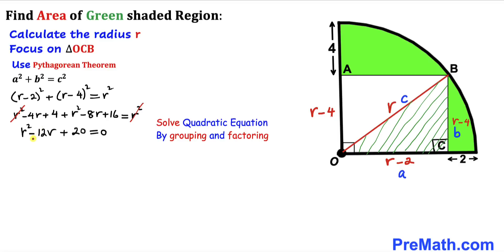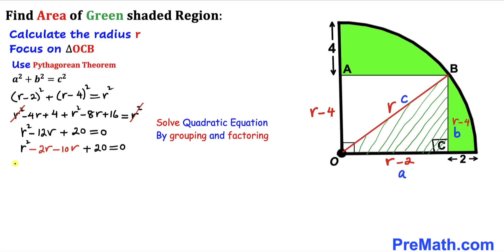Let's focus on the middle term. We can rewrite negative 12R as negative 2R minus 10R, which makes no difference in value. Between the first two terms, R is common, and in the next two terms, negative 10 is common. Factoring out R gives us R(R minus 2), and factoring out negative 10 gives us negative 10(R minus 2), both equal to zero. Since (R minus 2) is a common factor, we write (R minus 2)(R minus 10) equals 0.